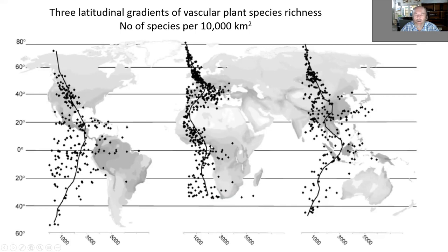Then we have the sub-Saharan tropical forests as the peak. While in the Southeast Asia, New Guinea-Australian region, the maximum is at the island region of Java, Sumatra, Borneo, and New Guinea.